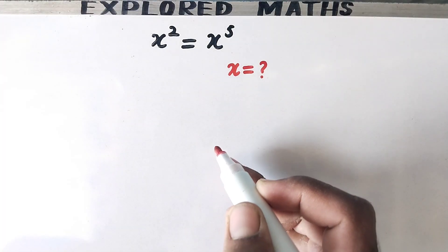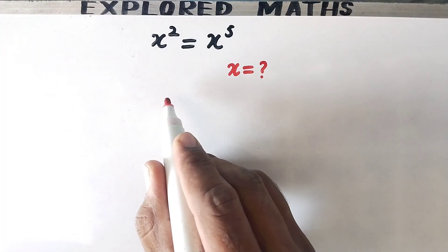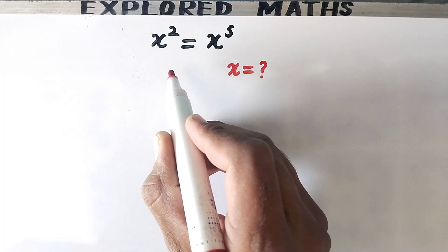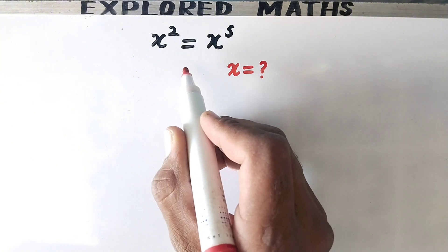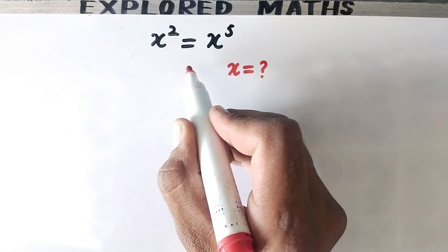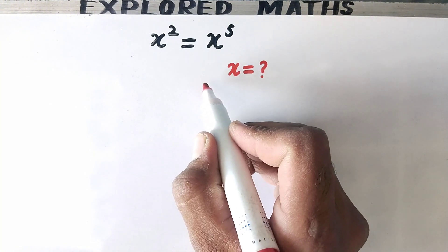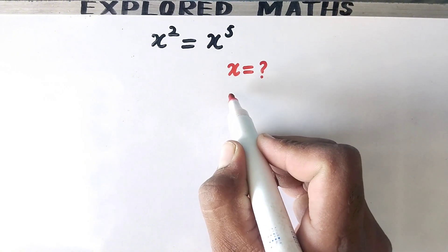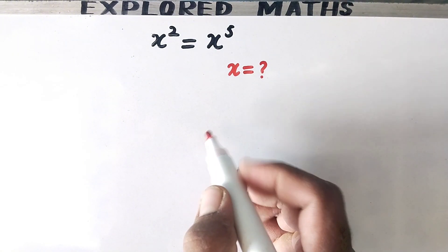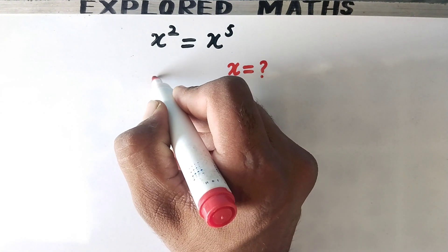Hello everyone and welcome to ExplodeMaps. In this video we are going to solve a very nice algebraic problem: x squared is equal to x to the power 5. Then x is equal to what? So let us see its solution.